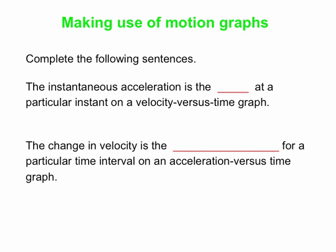Let's consider the following sentence: the instantaneous acceleration is the blank at a particular instant on a velocity versus time graph. The best single word to put in that blank is the slope. So if you've got a velocity versus time graph, you go to a particular point in time, find the slope of the graph at that point — that is the value of the acceleration.